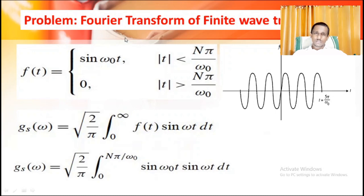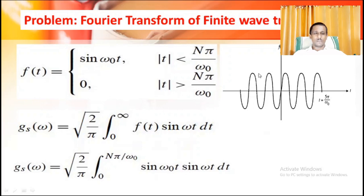Now our problem is the Fourier transform of a finite wave train. The function is f(t) = sin(ω₀t) for the interval |t| < nπ/ω₀, and f(t) = 0 for |t| > nπ/ω₀. The figure of our function shows sin(ω₀t) on both sides within nπ/ω₀, and zero outside — hence it is called a finite wave train.